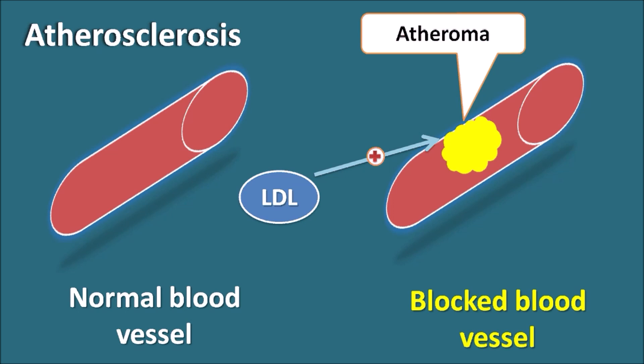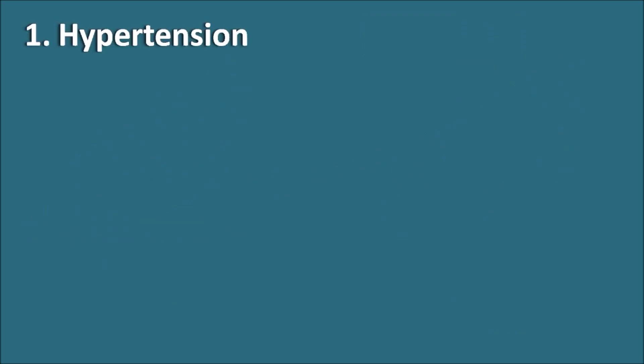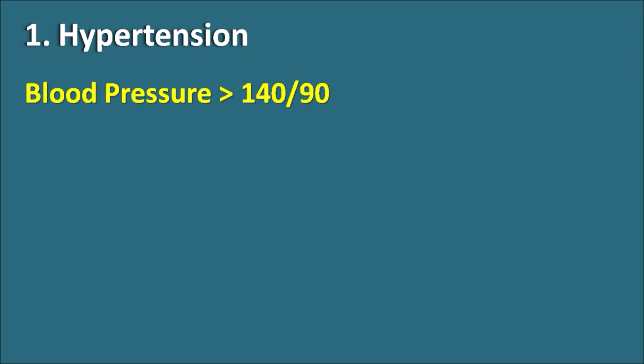Now let us see the 12 risk factors which are responsible for atherosclerosis, one by one. The first one is hypertension. When the patient has blood pressure greater than 140/90, we call it hypertension.